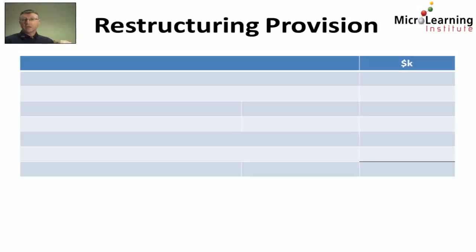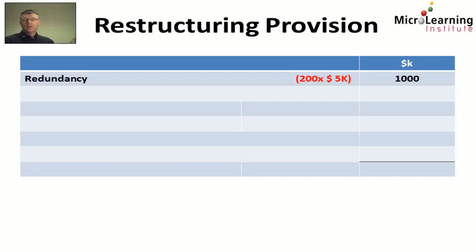This provision is called a restructuring provision and there are a number of elements to it. The first thing is we're told that there will be a redundancy. We're told that 50 of the 250 employees will be retrained. However, the remainder will accept redundancy and be paid $5,000 each. So this is a future commitment, a future obligation, so we can recognise a provision for that redundancy of $1,000,000.